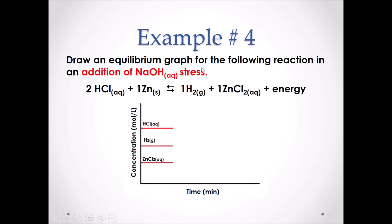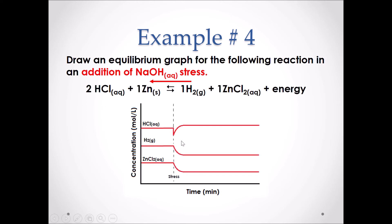Example number four. Draw an equilibrium graph for the following reaction with the addition of NaOH as a stress. NaOH is a strong base and it will react with an acid. Our acid is HCl. We will therefore remove HCl from the reactant side, so the equilibrium will shift left to replace the lost HCl. We have initially removed HCl, so we can see that it spikes downwards in the graph. But then our reaction will shift to the left, increasing the concentration of HCl until it flatlines. For our products, we are just losing concentration because of the shift to the left, so both products will decrease downwards and then flatline.